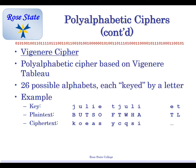This is called the Vigenère cipher — a polyalphabetic cipher based on the Vigenère tableau, or table. It has 26 possible alphabets, each keyed by a letter.